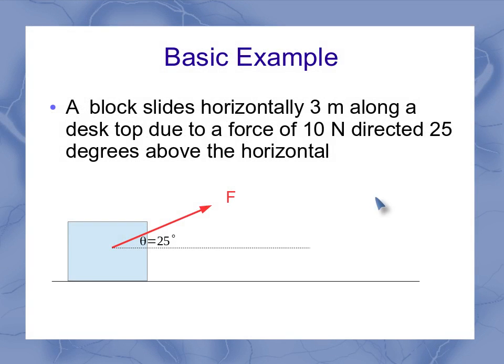So our basic example here, I've got a block, and it slides horizontally three meters along the desktop to the right, and it's got a force of 10 newtons directed 25 degrees above the horizontal. When I plug all that into my basic equation, I find that I've got 27.2 newton meters. We're going to compare some other values to that.